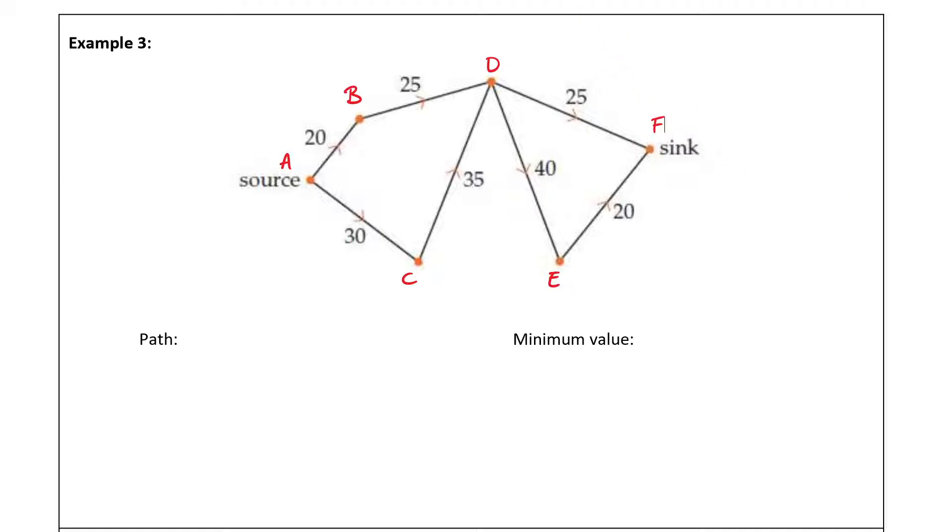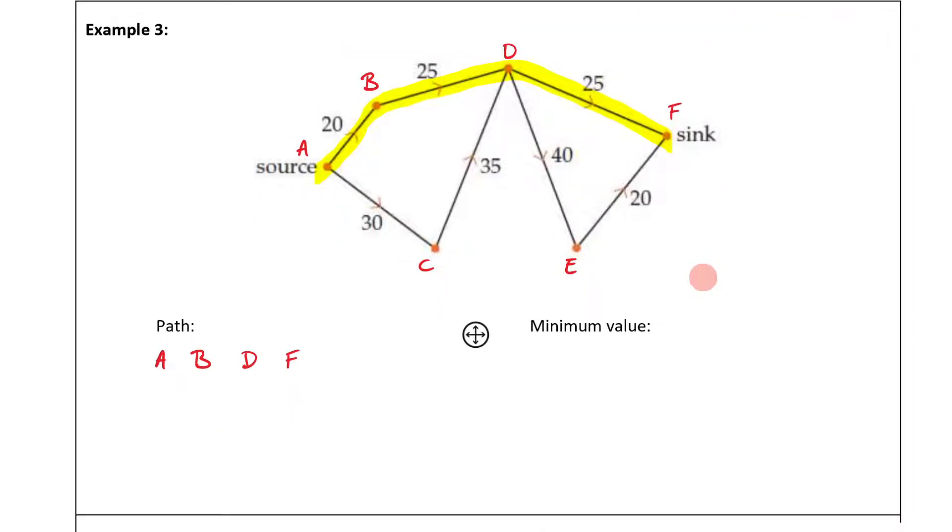The next thing that you want to do is figure out a pathway from source to sink. So the most obvious one would be A, B, D, F. So let's write that down. You then want to figure out the minimum value of this pathway. So the minimum value of this pathway is just going to be the smallest number, and the smallest number is 20. What you then want to do is subtract 20 from each of the numbers in the pathway. So 20 minus 20 is 0, 25 minus 20 is 5, 25 minus 20 is 5. And just like that, we have finished with that pathway.